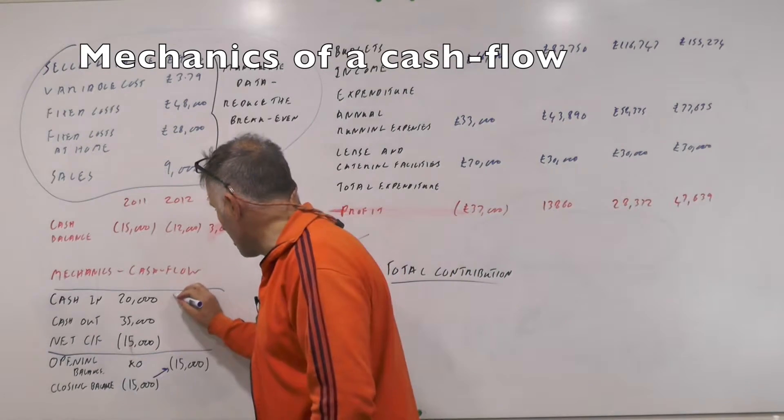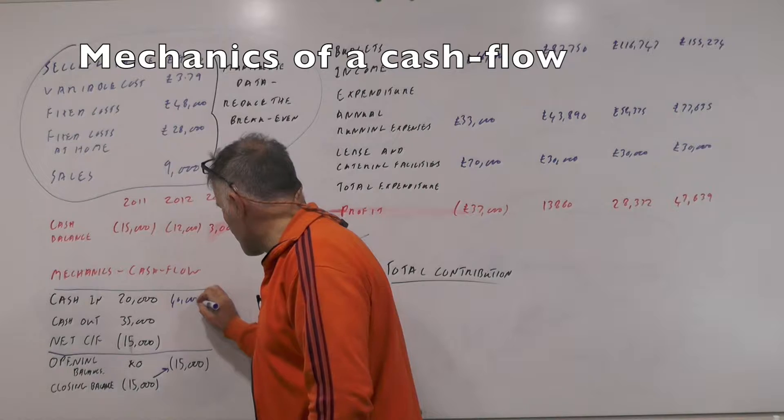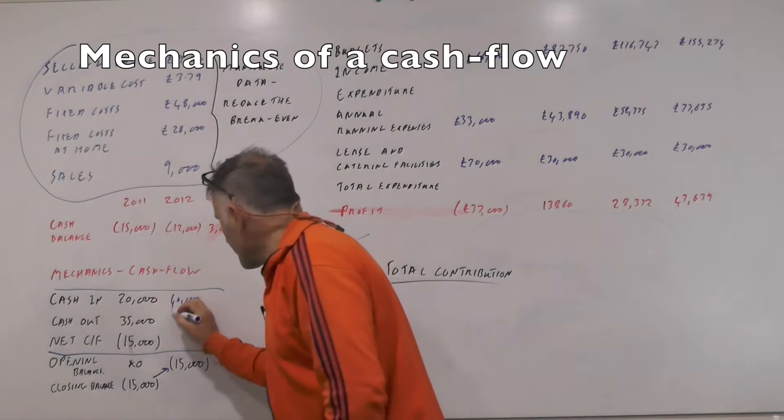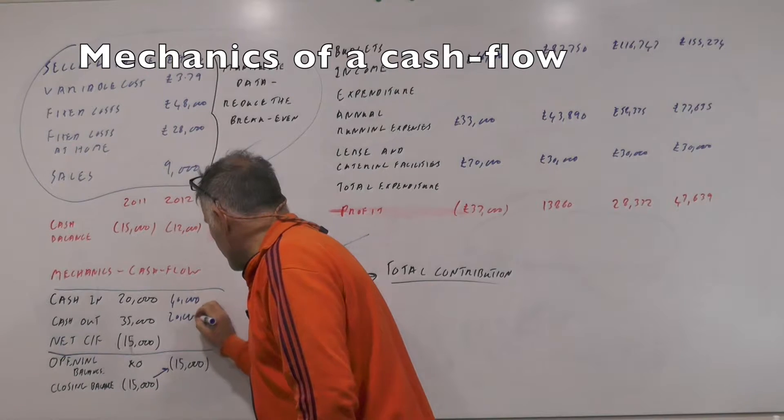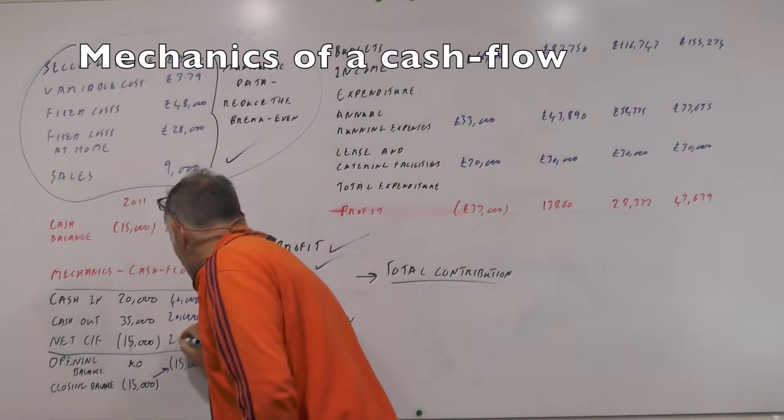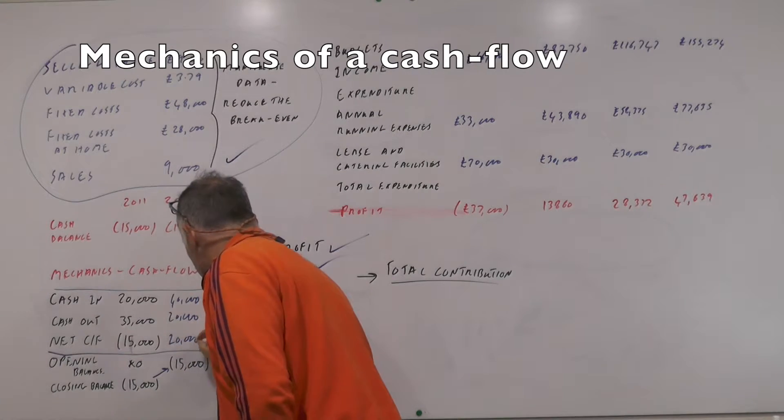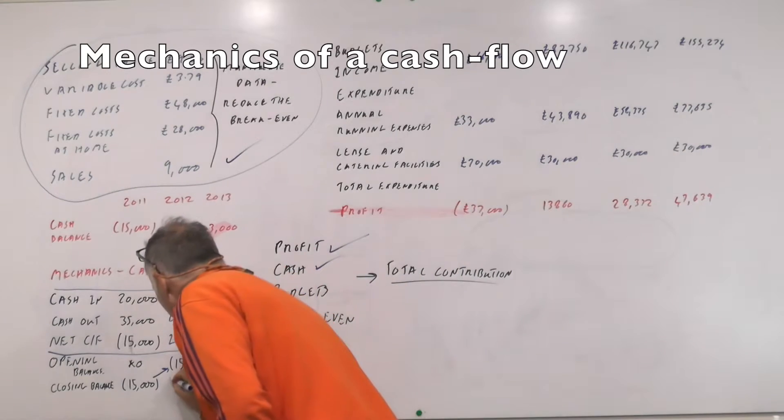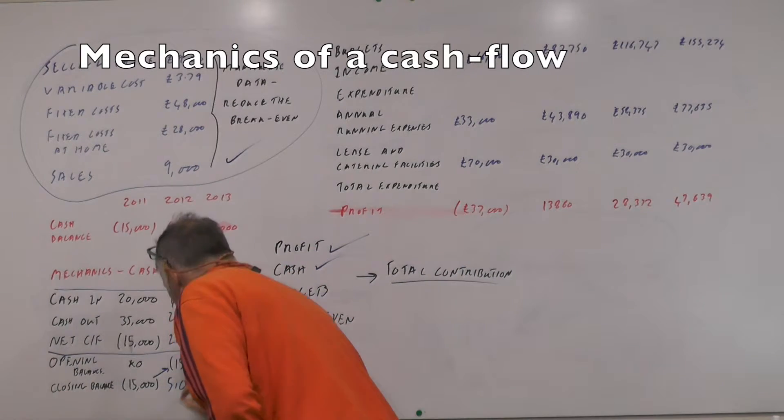So the next month just say 40,000 pounds comes in, comes into the business in total. Say 20,000 pounds goes out so therefore your net cash flow is obviously going to be 20,000 pounds plus. We've got minus 15,000 pounds in there at the moment so we end the month at 5,000 quid.